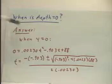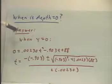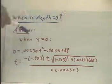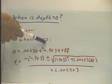We return to the question of when is depth zero, and let's get an algebraic answer to this question. When is depth zero? Since y stands for the depth, depth is zero when y equals zero.